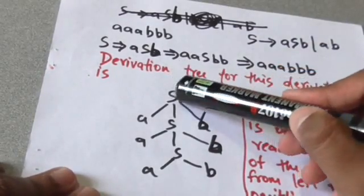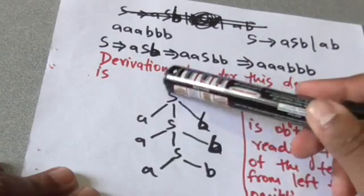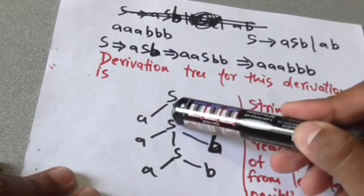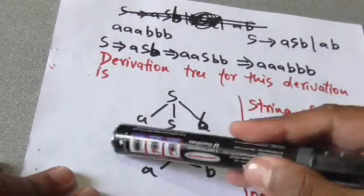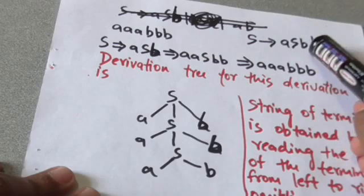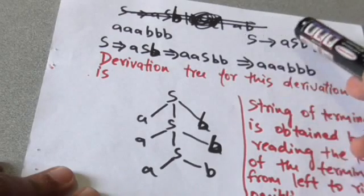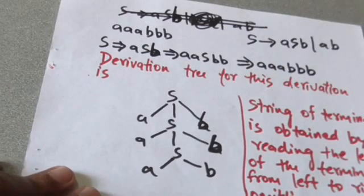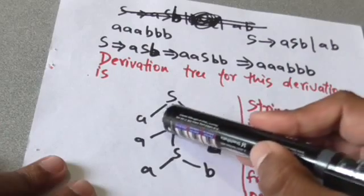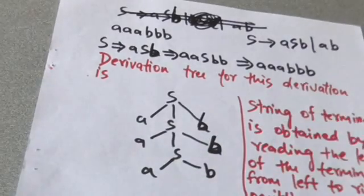Here we have labeled the root by S. Leaves are labeled by terminals and interior nodes are labeled by variables. See this node S — its children are a, S, b from left to right, which means there is a production rule S derives aSb in P.